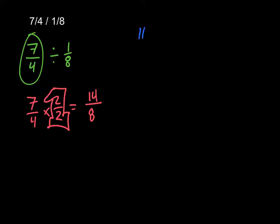Once we have that, we can do our 14 eighths divided by 1 eighth, and then we can go straight across. So then we end up with 14 over 1, which is the same as 14.